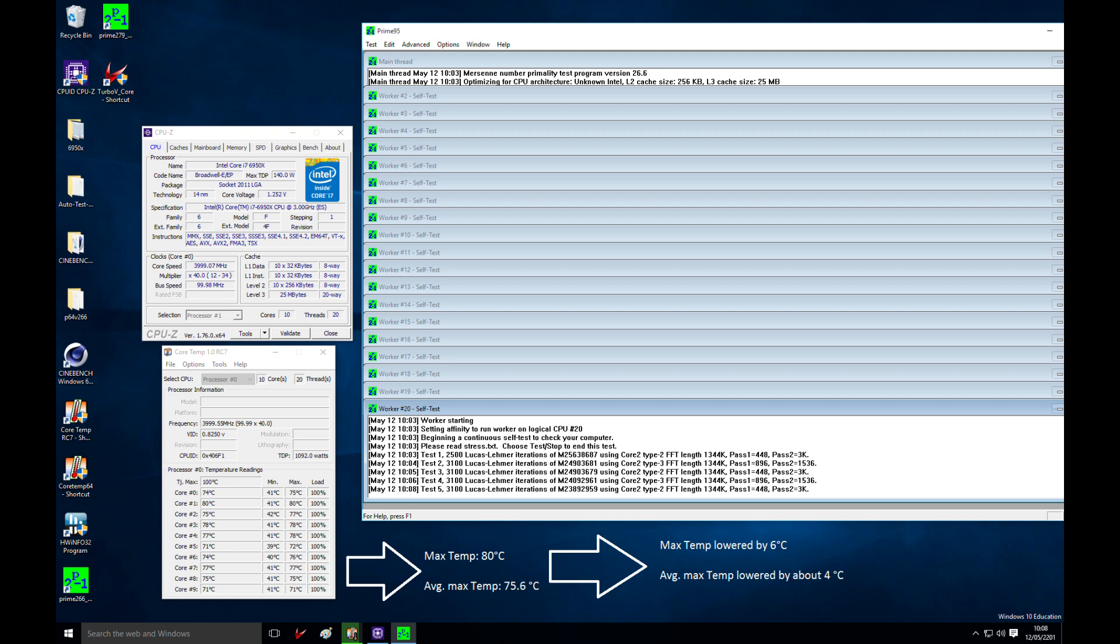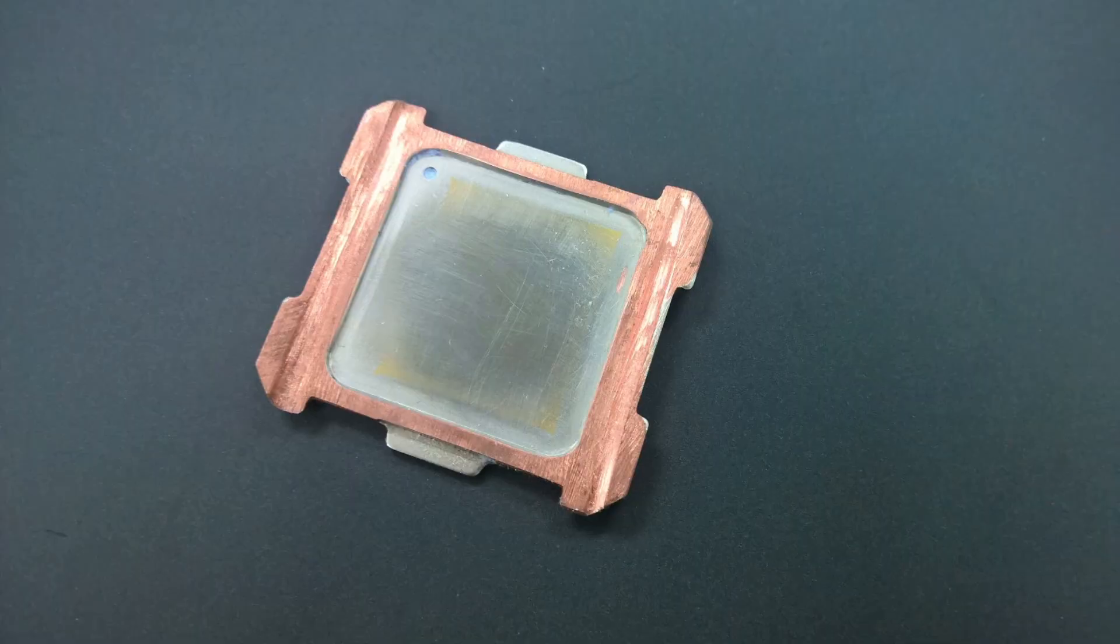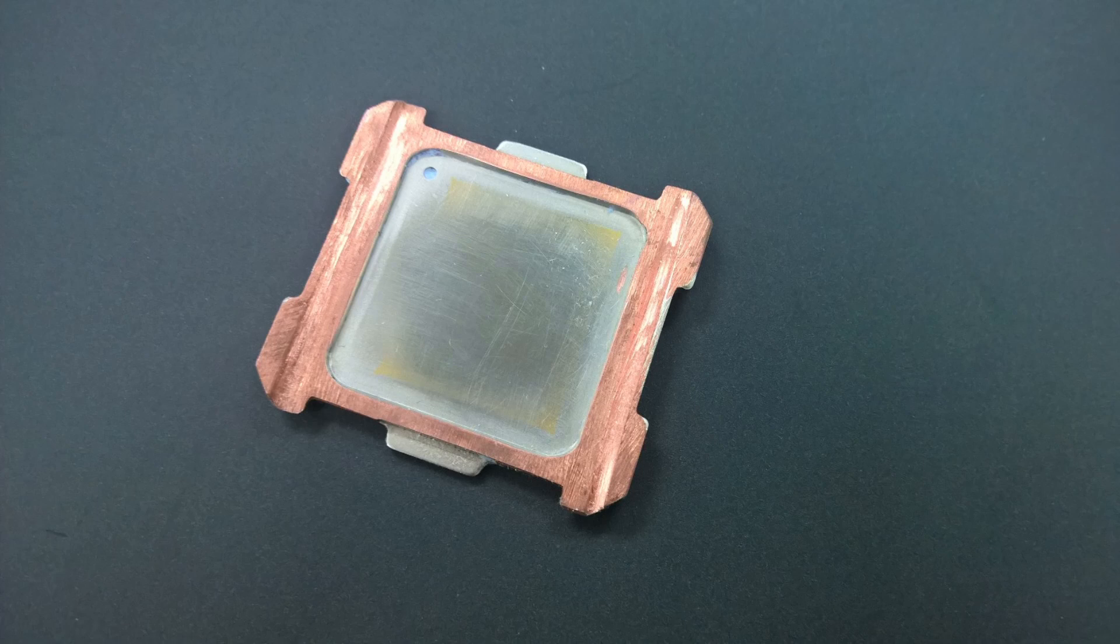Actually, I have to admit that I expected more from this, especially considering the effort I put into this. And I think more should be possible if I sand the IHS, because I think the contact is not perfect between the die and IHS. Here's a picture of the IHS I took after sanding the corners, and I hope I can get more and better results out of this after sanding. So I will keep you updated on this. Unfortunately, I didn't have time before the release to test more with the sanded IHS, but I will surely keep you updated on this topic.